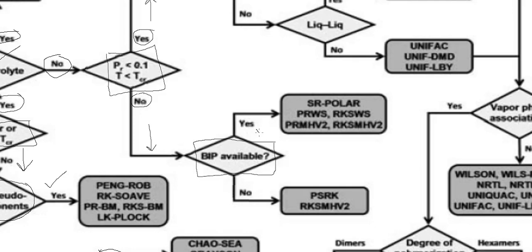If binary interaction parameters are available, we select Soave-Redlich-Kwong, Peng-Robinson extensions, and Redlich-Kwong extensions. If binary interaction parameters are not available, we again select the Redlich-Kwong extension and SRK extension. These extensions will be discussed in more detail as we move forward, but currently this is the basic introduction to property package selection.